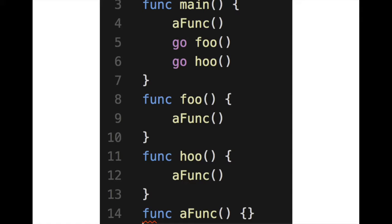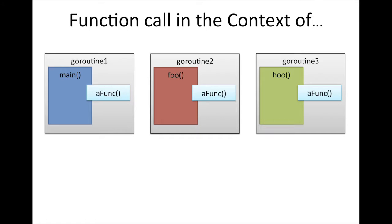One that the go runtime created to run main, and the two that we launched. And now, each of our goroutines, also, their functions, foo and hoo, are also going to call this aFunc. So this aFunc is being called three times: one by our main, and then one for each goroutine.